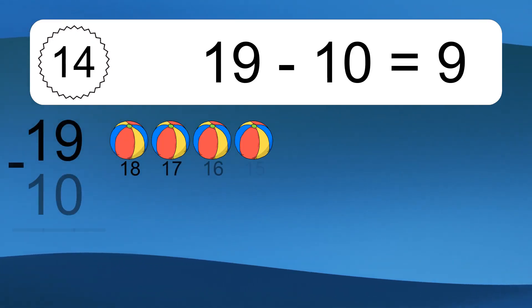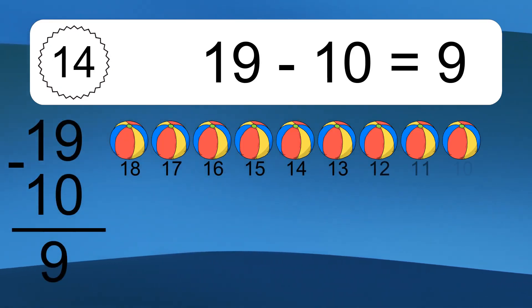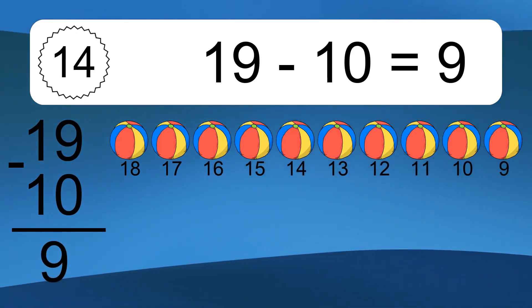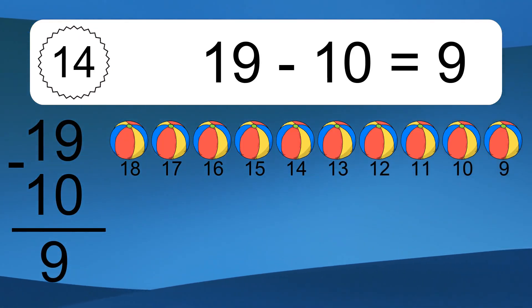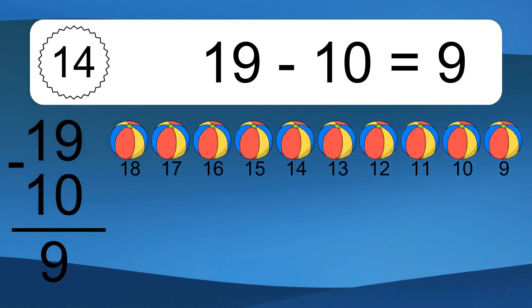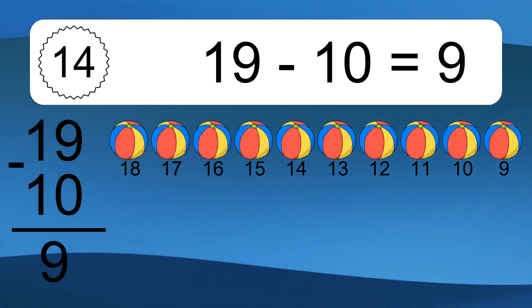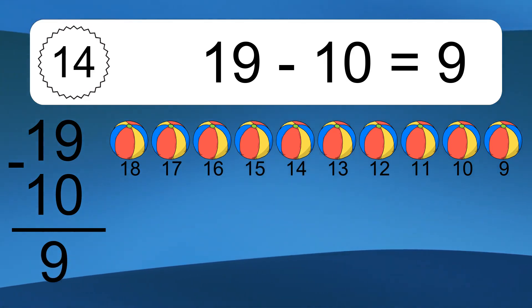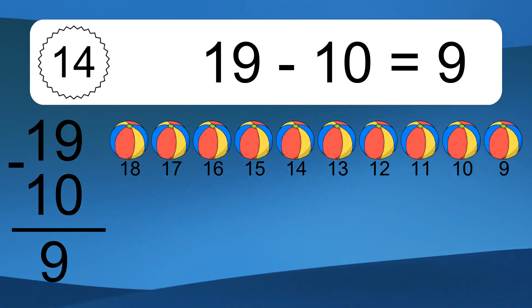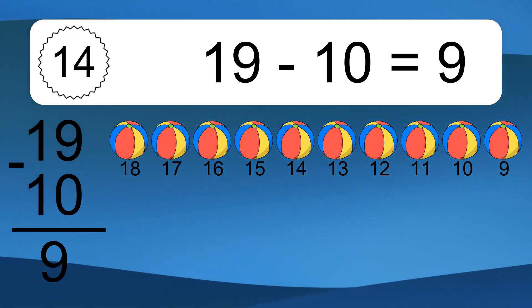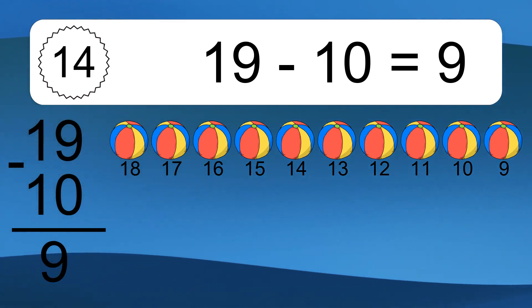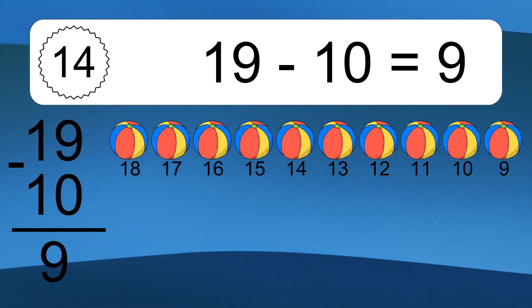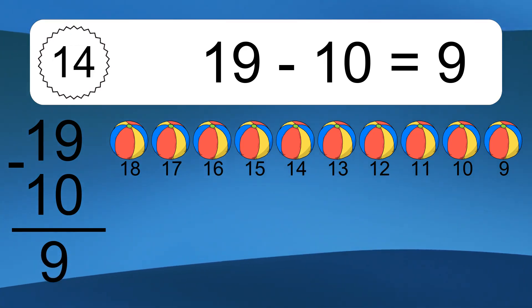19 minus 10 equals what? 19 minus 10 equals 9. Let's count it. 18, 17, 16, 15, 14, 13, 12, 11, 10, 9.